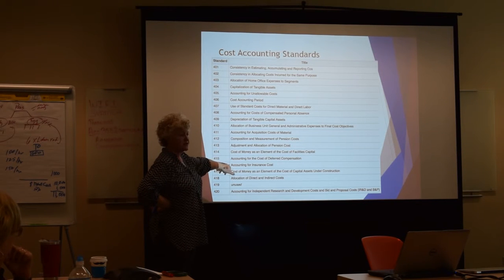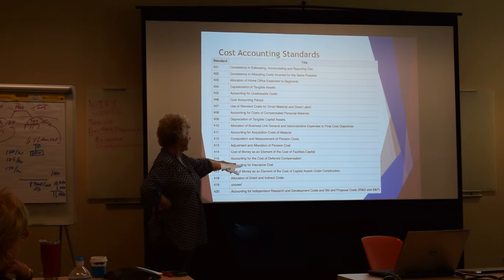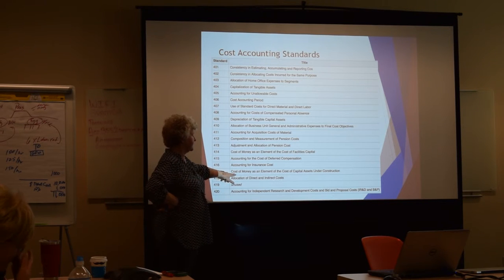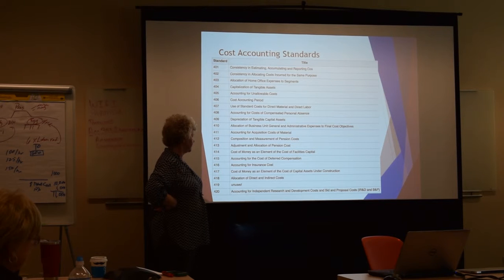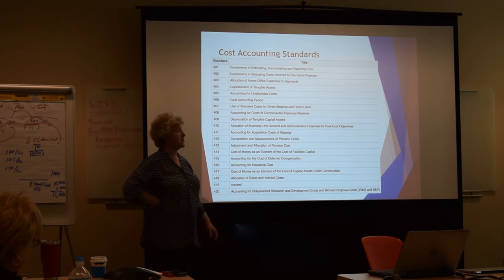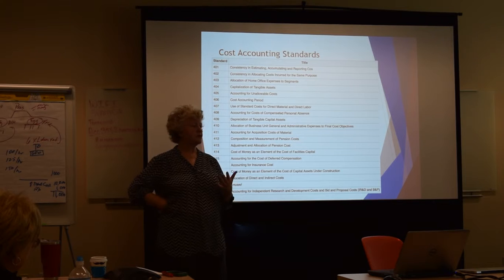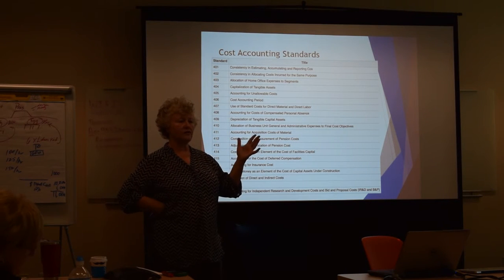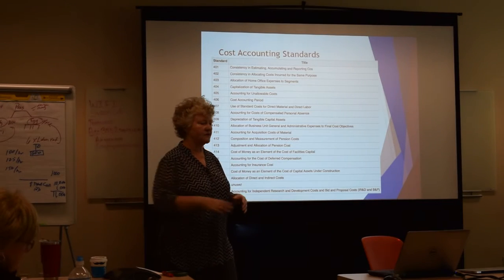Accounting for cost of deferred compensation — when you have deferred compensation activities in your company, how do you record that? Insurance costs. If you're doing any construction, what's the cost of money as an element of capital assets? Allocation of direct and indirect costs, and then R&D-type costs. These are the Cost Accounting Standards that whoever is doing your books should be well aware of, because they apply on both the commercial side and the federal government side.